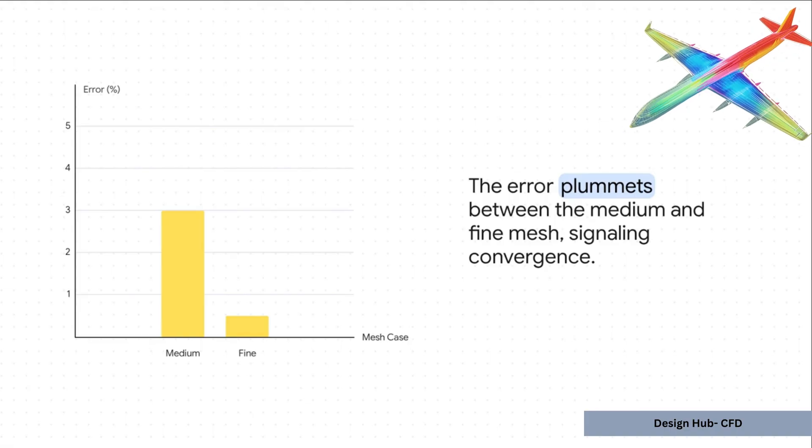That tiny change is the signal we've been waiting for. It tells us our solution is stabilized. It's converged. We can now trust this result and be confident that just adding more cells would be a total waste of time and computer power.